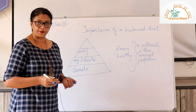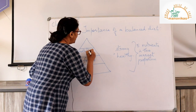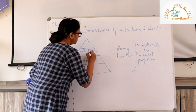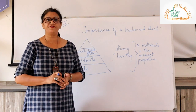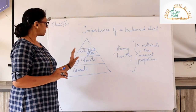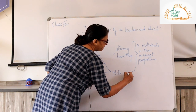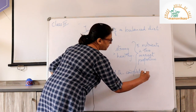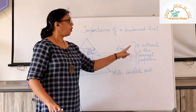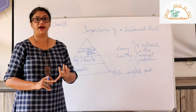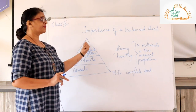Next we have milk and milk products like curds, cheese, and also meat, fish, and pulses. These food items have to be eaten in moderate amount. Milk is called a complete food because it gives us all five nutrients — carbohydrates, fats, proteins, vitamins, and minerals.